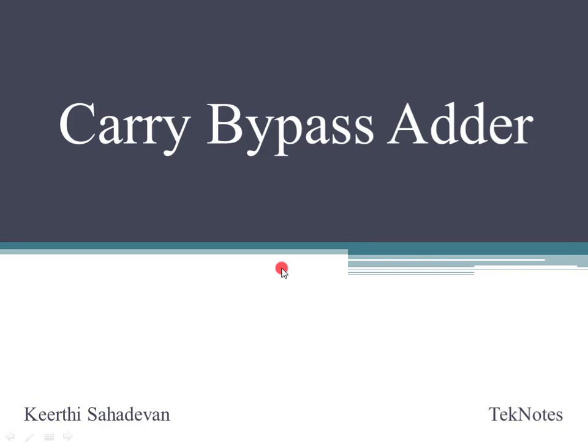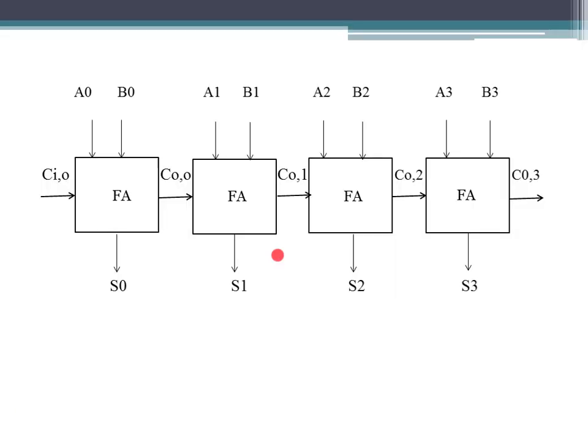We are going to do optimization at the circuit level. At the circuit level, there are types of adders. One is Carry Bypass Adder. First of all, we are going to look at the Ripple Carry Adder, which is the basic adder.